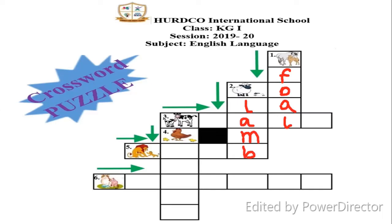Picture number three is a cow with a baby, but this time the arrow is pointing rightwards, which means we have to write the cow's baby's name left to right. The cow's baby is calf: C-A-L-F. We have already written the A from lamb and the L from foal, so we don't need to write those letters anymore. After C, A, and L, the next letter is F — we write F in the next box.